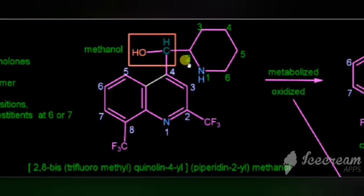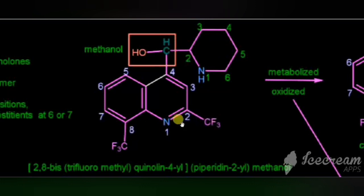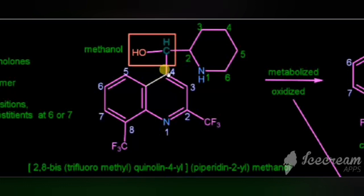Now we will see the chemical name of mefloquine. Methanol is chosen as the parent. With that methanol, the quinoline and piperidine are attached. We have trifluoromethyl groups — one at the 2nd portion and another at the 8th portion. That is why it is 2,8-bis(trifluoromethyl), quinoline attached at the 4th portion gives 4-yl, and piperidine-2-yl methanol.